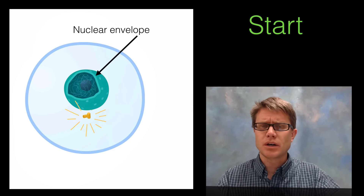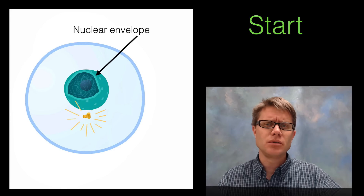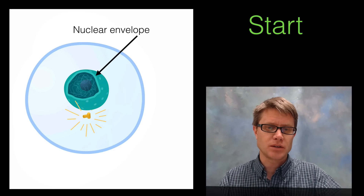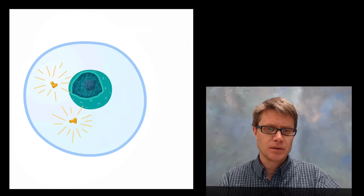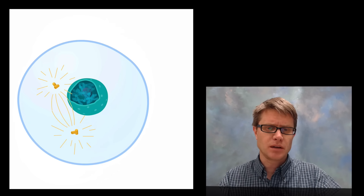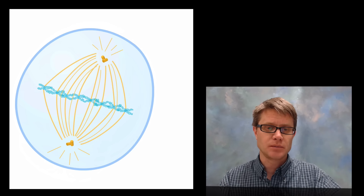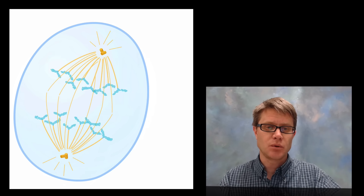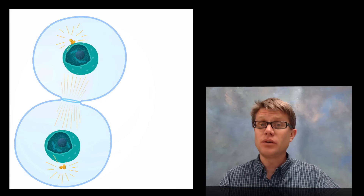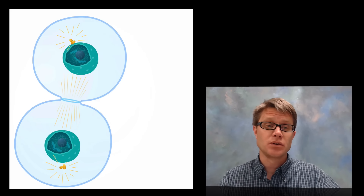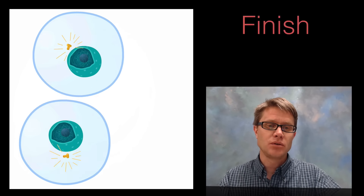Now let's look at what happens to the nuclear envelope — that membrane around the nuclei. Not much happens at first, it gets a little smaller, and then boom, that whole nuclear envelope fragments apart and it's gone. Then it reforms once the new cells form, and we have new nuclei forming on each side.